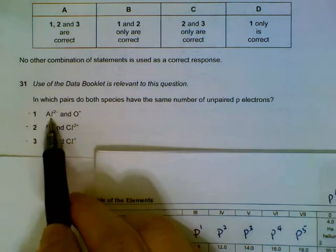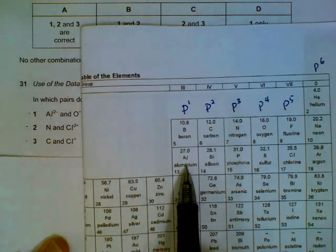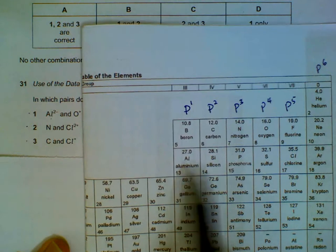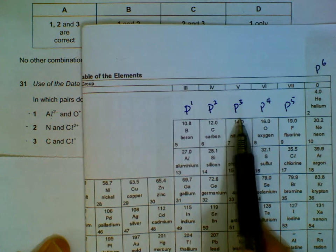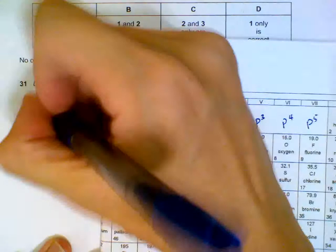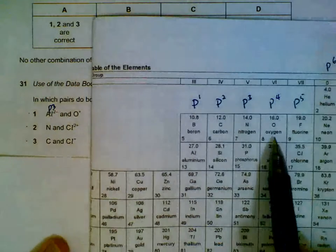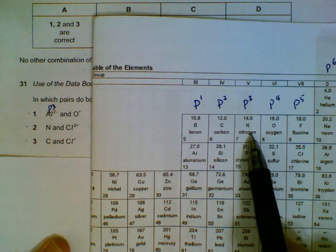If you want to find out what configuration Al²⁻ ends up with, we start off with Al, and since it's 2 minus means it gains two extra electrons, so one more electron, two more electrons. So it will actually end up to have a p³ configuration. O⁺: we start with O and then since it's plus it actually loses one electron, so we move back one step. It also ends up with a p³ configuration.